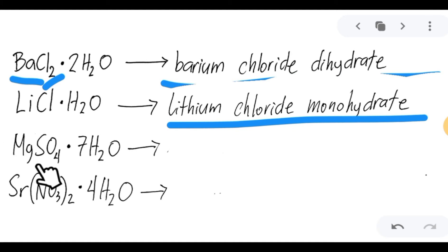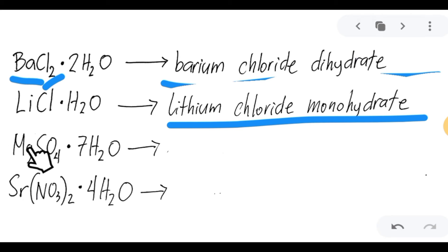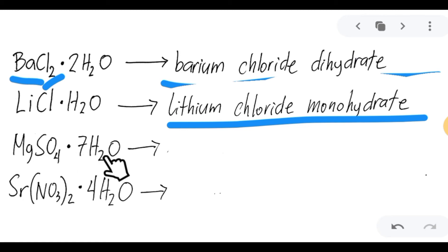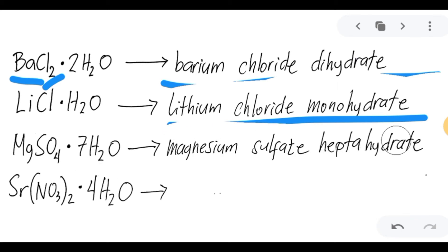How about this one? This is magnesium and SO₄, which is an anion. You can check this on your periodic table — the name of this anion is sulfate. So this is magnesium sulfate. Since there are 7 molecules of water, we will use the Greek prefix hepta. So this is magnesium sulfate heptahydrate. Hepta stands for 7.